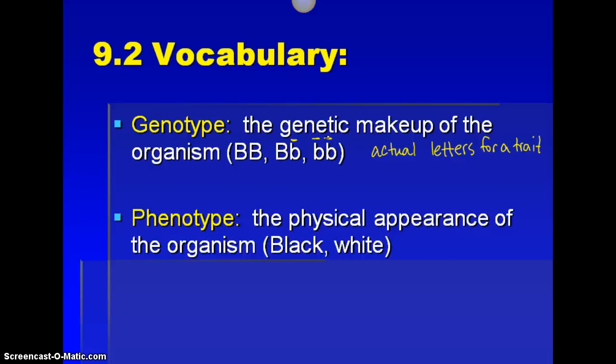Phenotype is what the physical appearance is for that individual. So if we're doing fur color for an animal, we might have black fur versus white fur — one would be dominant, one would be recessive. It's actually what you are seeing in that individual. It's a little less specific than the genotype, but it's really obvious — you can usually just identify it by looking at that individual.